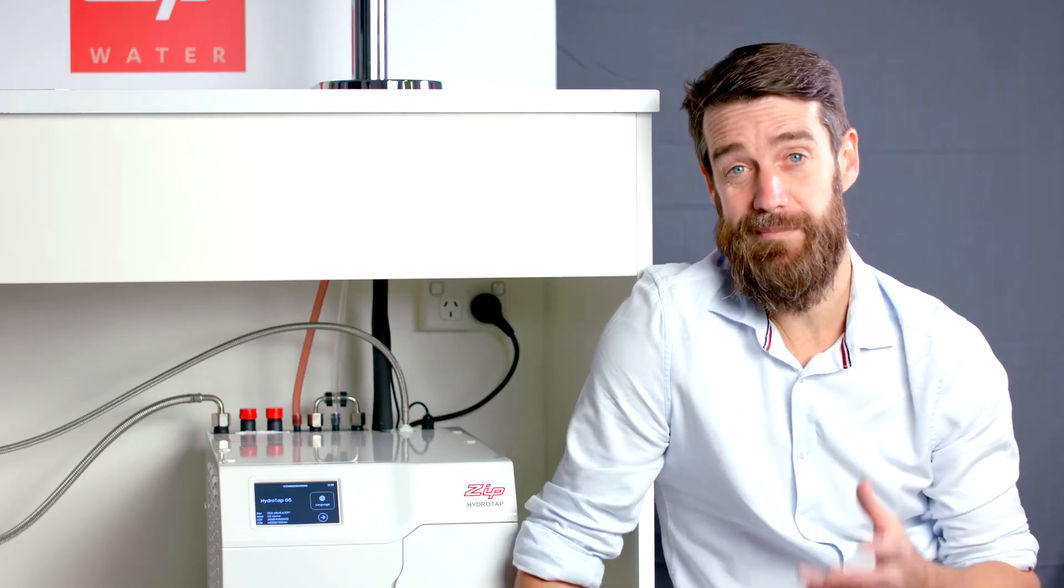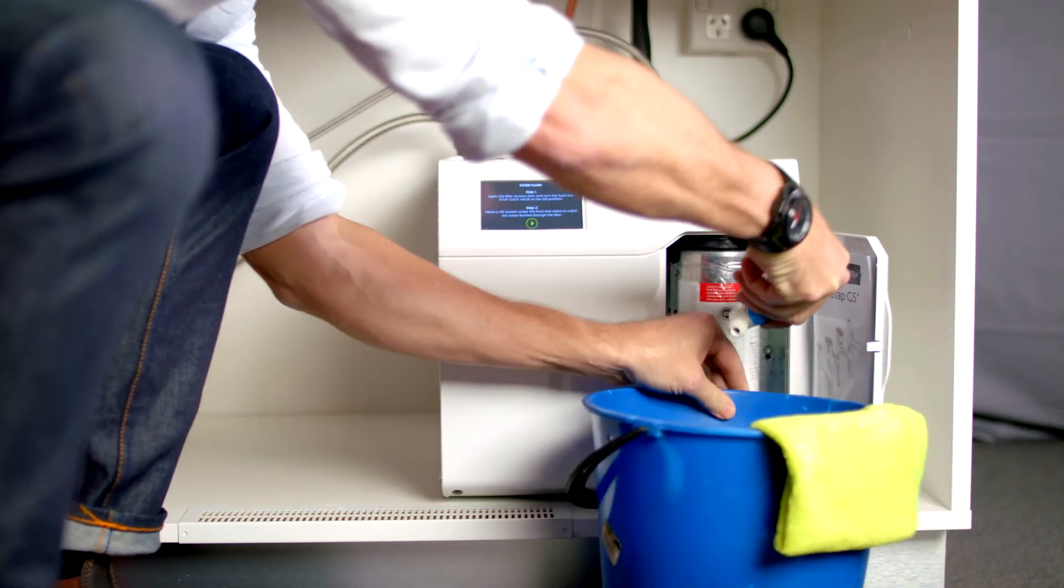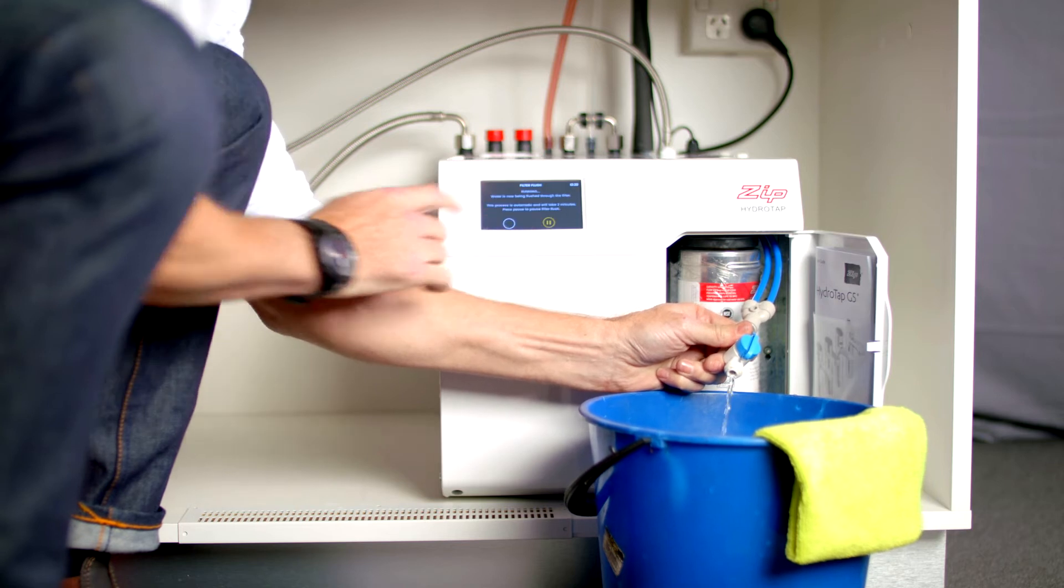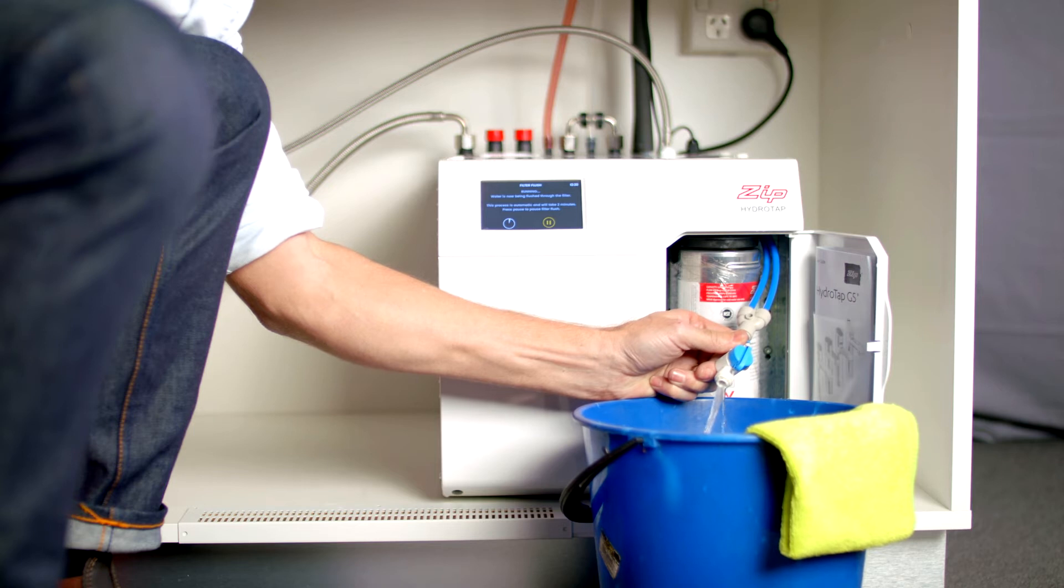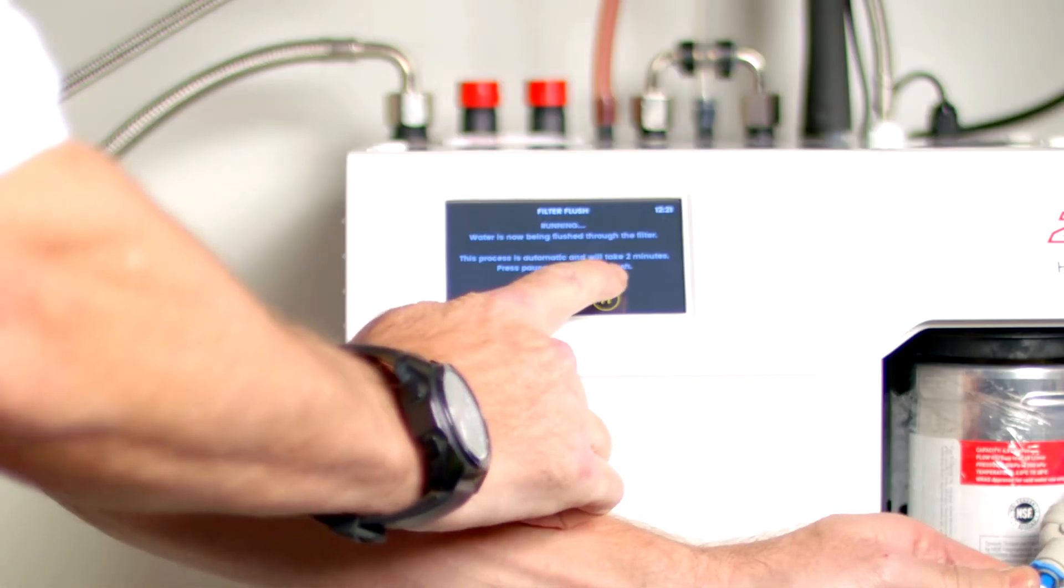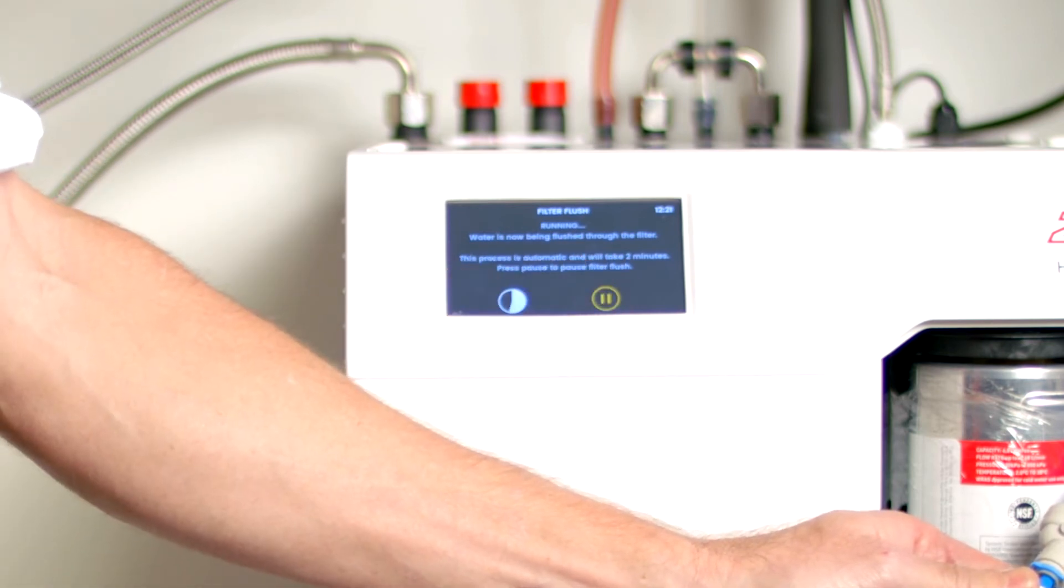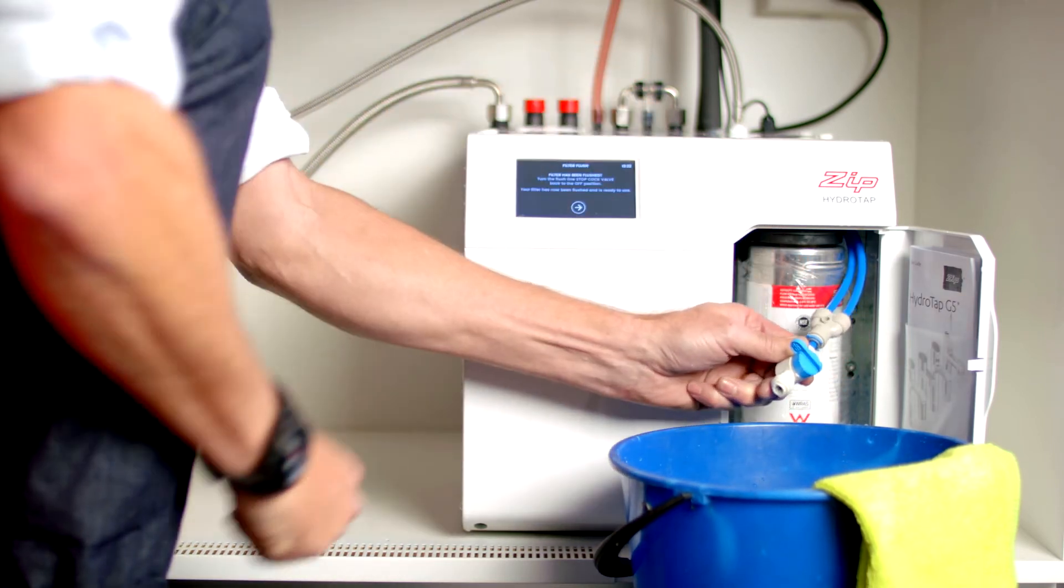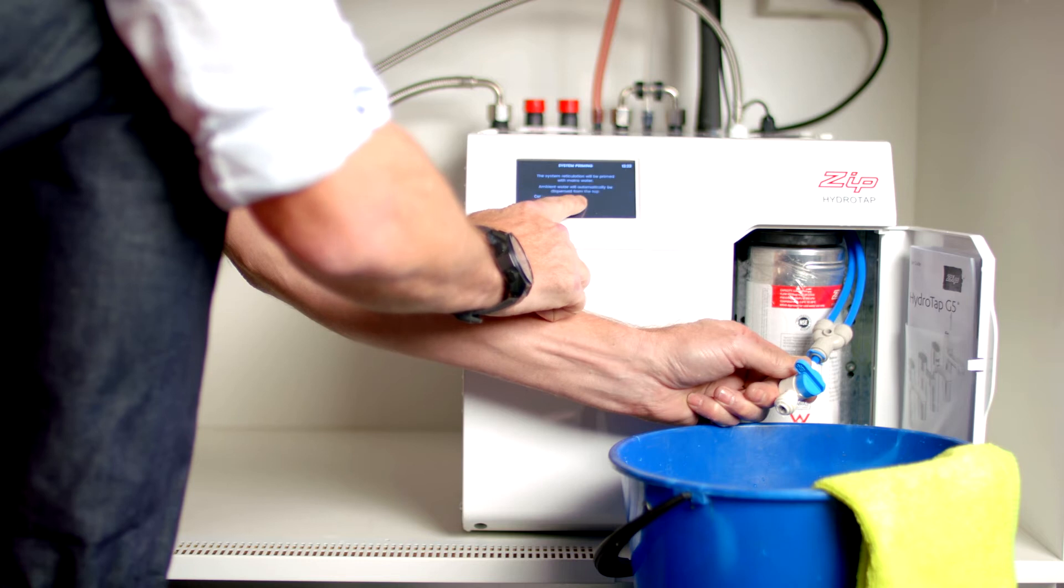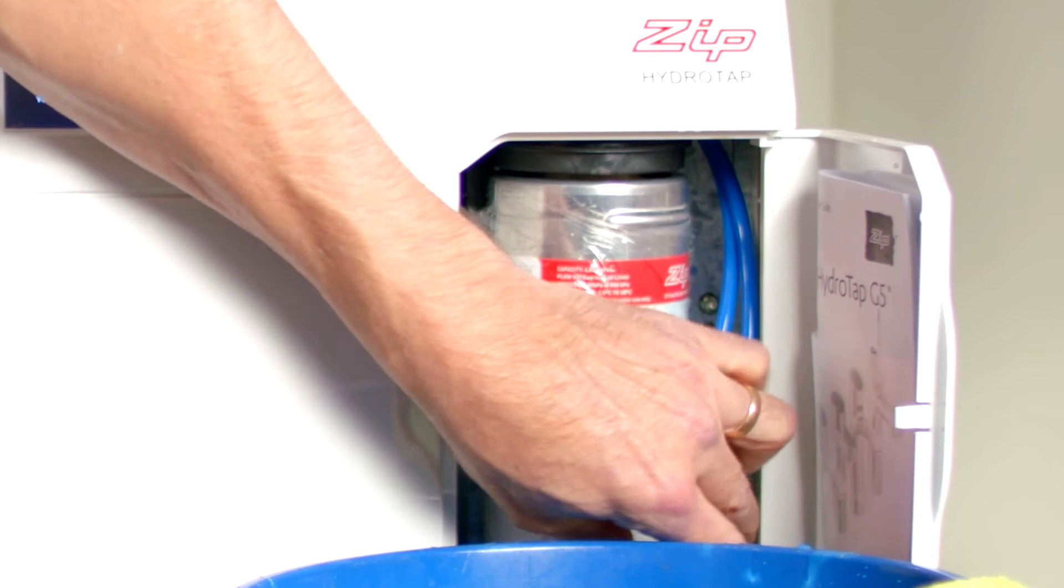Next the internal filter needs to be flushed. Using a bucket place the filter flush hose in the bucket and open the stopcock. Press the play button and the filter flush process will start. This process is timed to take two minutes. If you need to pause the filter flush press the pause button on the LCD. When you're ready to resume the filter flush press the play button. Once the filter flush has stopped turn the stopcock off and give it a shake. Press the arrow button to go to the next screen. Put the flush hose back in the filter compartment and close the filter door.